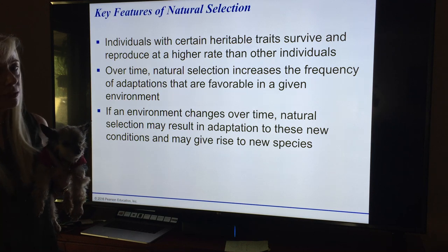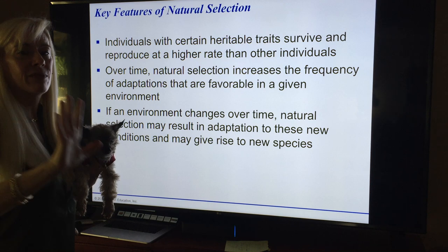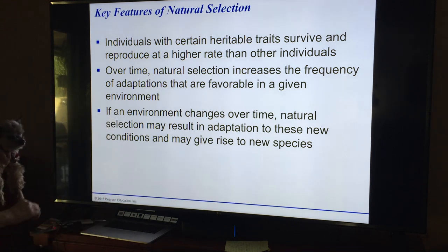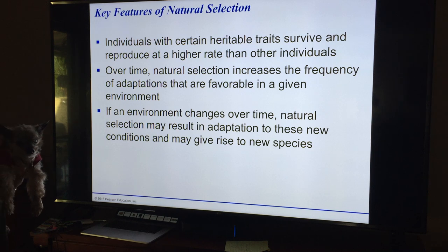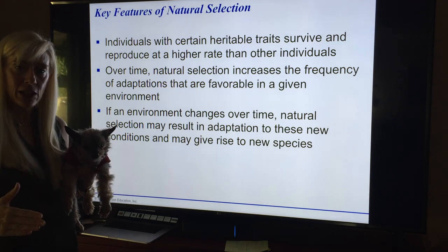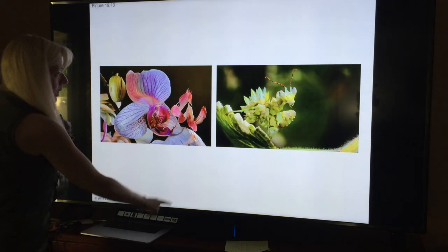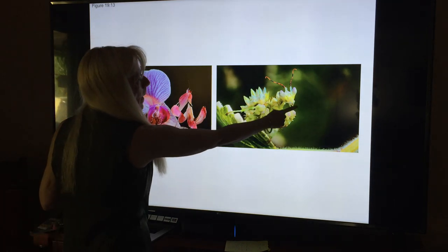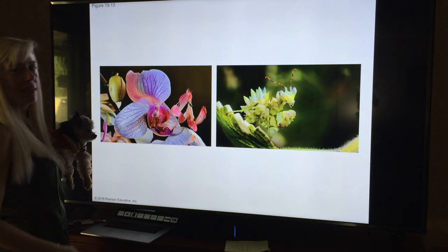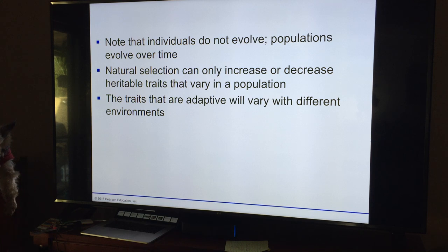Individuals with certain heritable traits survive and reproduce at a higher rate than others because they're better adapted to the environment. If you're healthier and sturdier, you're more able to go through the reproductive process. Over time, natural selection increases the frequency of adaptations that are favorable in a given environment — so long as that environment is not changing too rapidly.